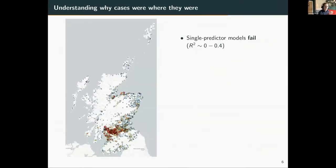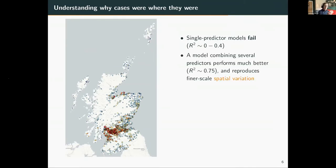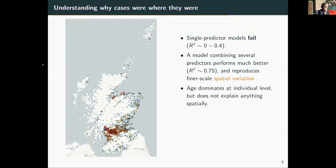Any single-predictor model fails catastrophically at predicting where those cases were. With age alone you explain essentially none of the spatial variation. With density you get to around 40% but it still isn't a great fit. When you combine all predictors in a random forest you get to an R-squared of around 75%, and more importantly you reproduce the spatial variation across Scotland without overfitting or underfitting certain major regions. At the individual level, younger people were far more likely to test positive, but this doesn't explain anything on a spatial level.